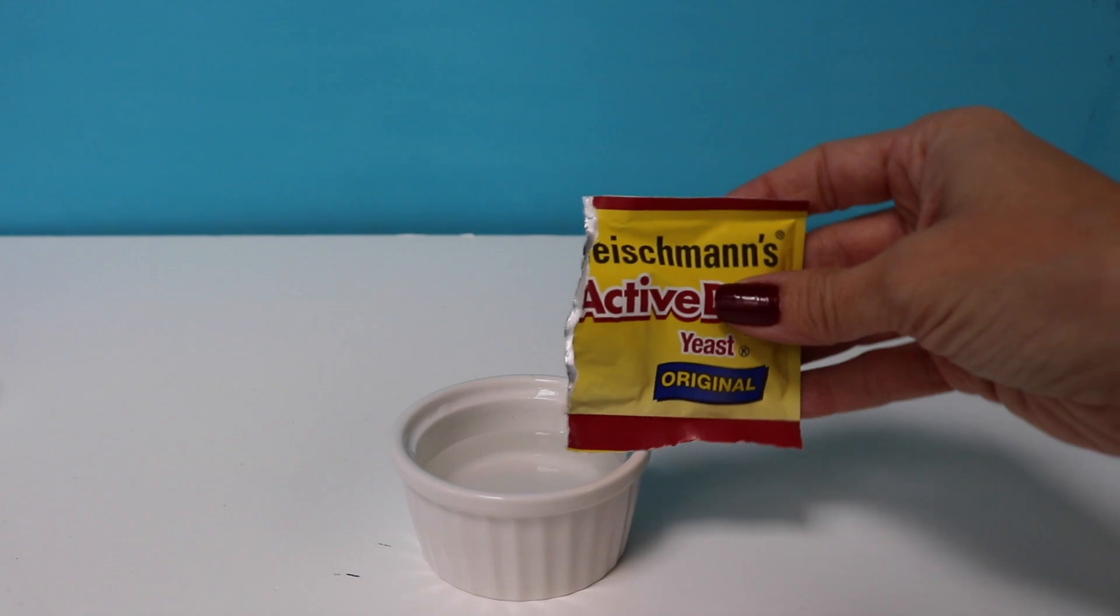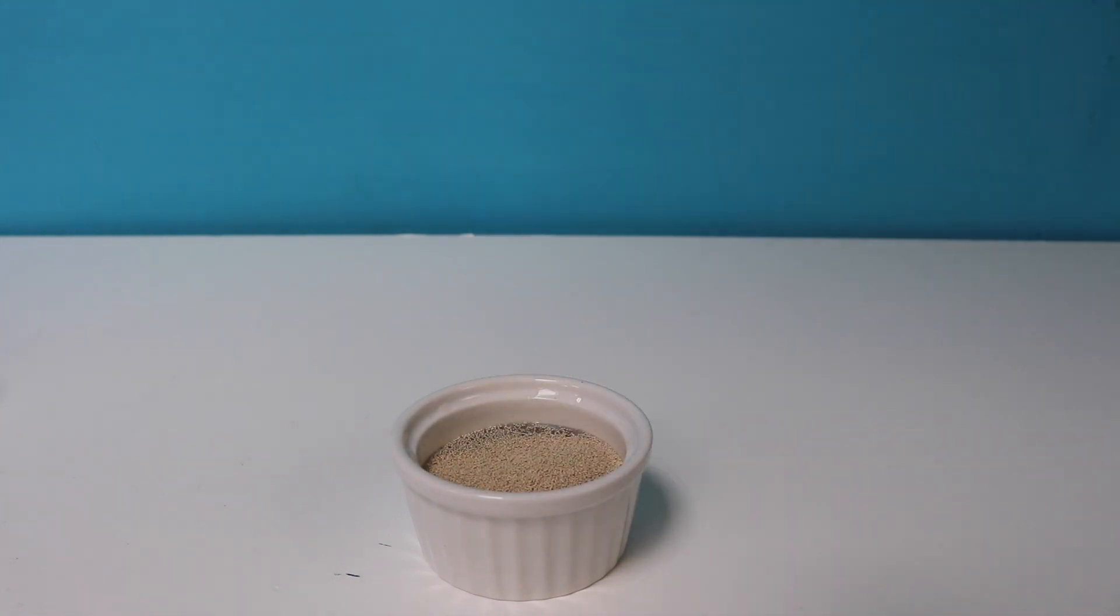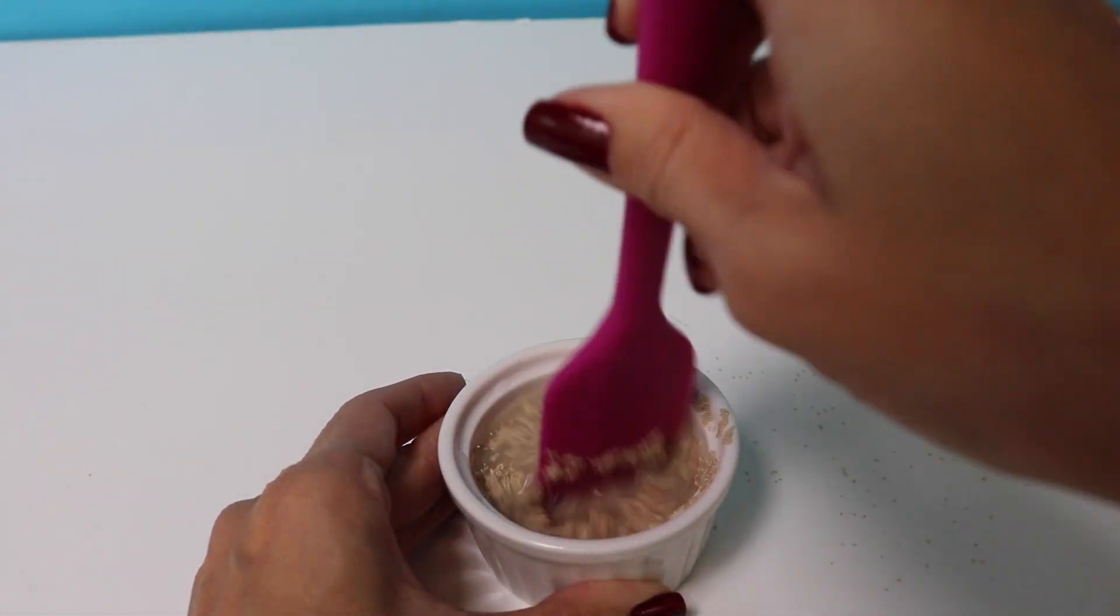Then you need a packet of dry yeast. One packet is approximately one quarter ounce. And you're going to pour the yeast into the warm water and just give it a quick stir.